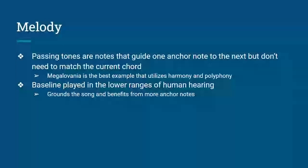Melovania is one of the best examples of a song that effectively utilizes harmony. The song has multiple examples of both polyphony and harmonization in its melodies. The bass line is a special type of melody that is played in lower ranges of human hearing. It's typically used to ground a song to a chord progression, which means a bass line benefits more from having anchor notes — especially the root note of a chord — although having passing tones is still acceptable and can even be spiced up as a bass line.